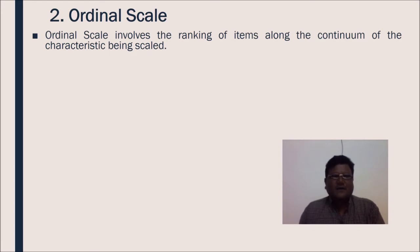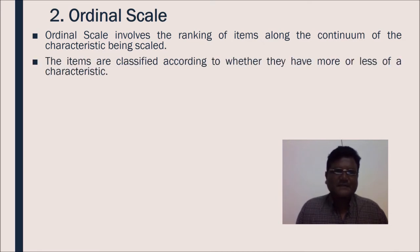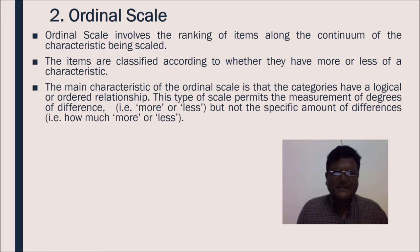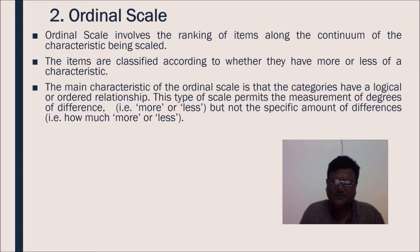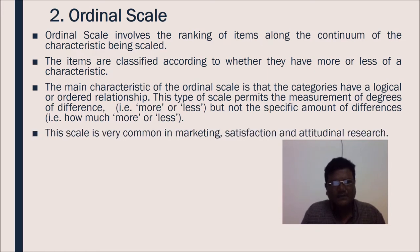Second scale, that is ordinal scale. Ordinal scales involve the ranking of items along the continuum of the characteristics being scaled. Items are classified according to whether they have more or less of a characteristic. The main characteristics of ordinal scale is that the categories have a logical or ordered relationship. This type of scale permits the measurement of degrees of difference, that is more or less, but not the specific amount of differences, that is how much more or less. Here, the difference is, in first scale, the things are divided in 2 or 3 or 4 parts, just on the basis of some characteristics. Now, here, the things are divided in 2 or 3 or 4 categories on the basis of some difference. The difference is less than or more than.